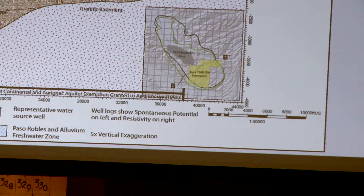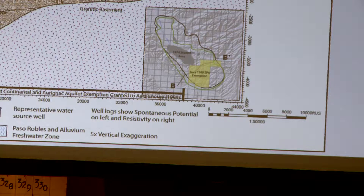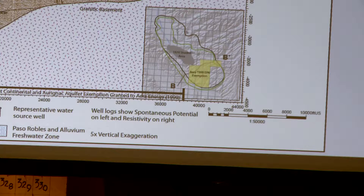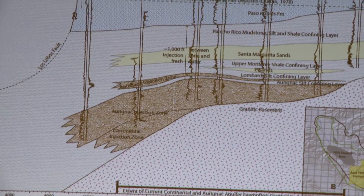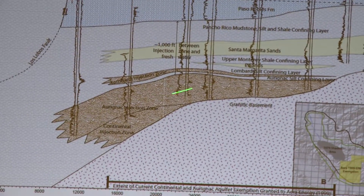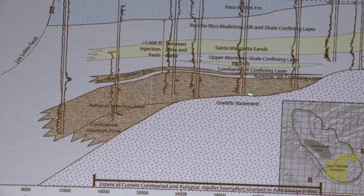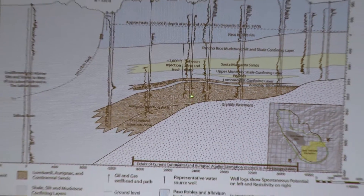When we look at this in context with this cross-section, we can see those units that we just looked at on the type log. I'll draw your attention to the Paso Robles formation up near the top — that light blue colored freshwater bearing zone — and then we have multiple low permeability zones here impeding vertical migration of fluid, until finally we get down into the Lombardia and the Aranac. The thicknesses of these zones vary across the field, and we'll talk more about that a little later on.